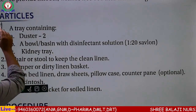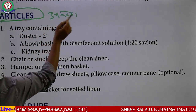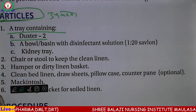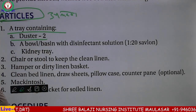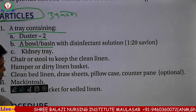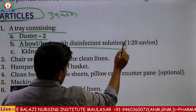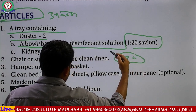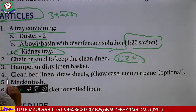उसके बाद में उपकरण क्या-क्या लेते हैं — bed बनाने के लिए क्या-क्या उपकरण लेने चाहिए, article क्या-क्या लेने चाहिए। तो सबसे पहले है a tray containing — जिसके अंदर दो duster लेते हैं, एक bowl और एक basin लेते हैं जिसमें disinfected solution होता है, एक kidney tray ले लेते हैं।